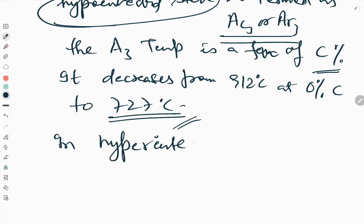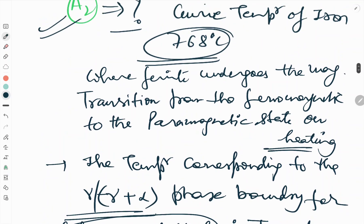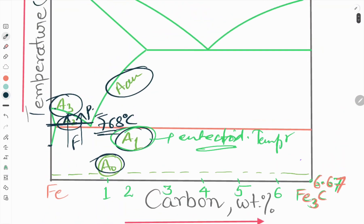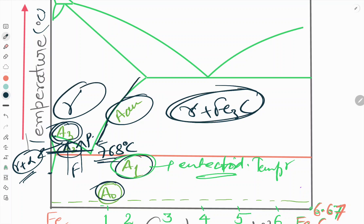In hypereutectoid steel, gamma and gamma plus Fe3C, this phase boundary is called ACM. This is A3 boundary for gamma and gamma plus ferrite, and this boundary is called ACM boundary for gamma and gamma plus Fe3C.